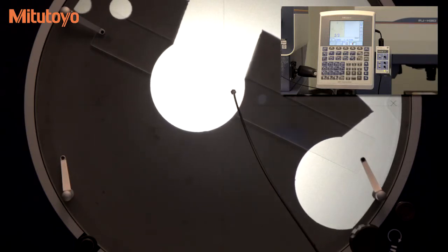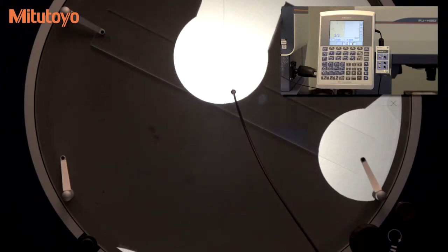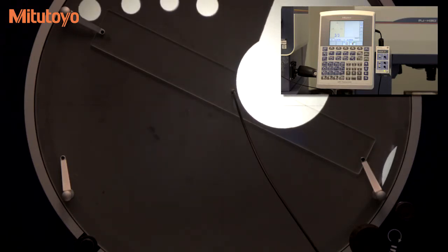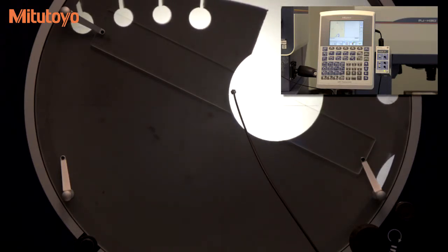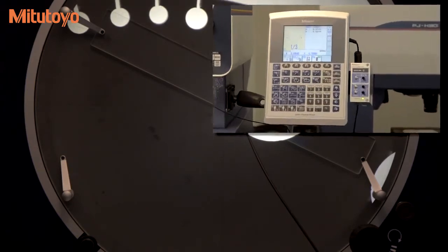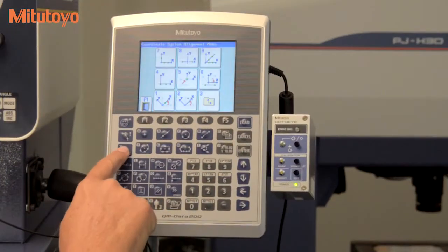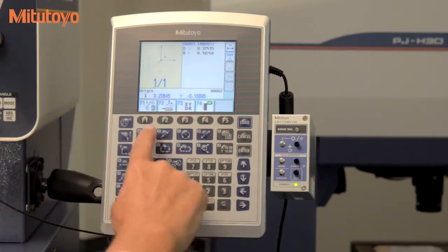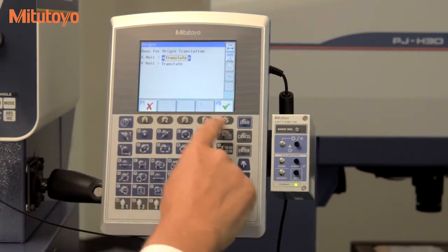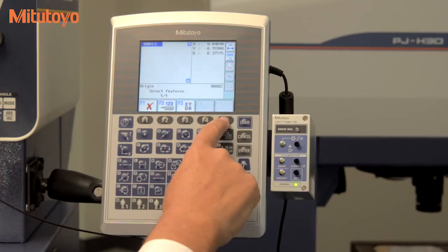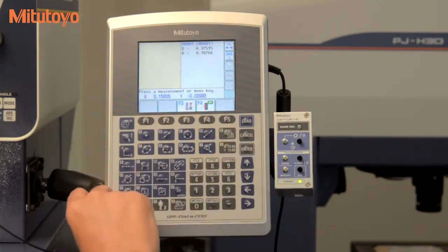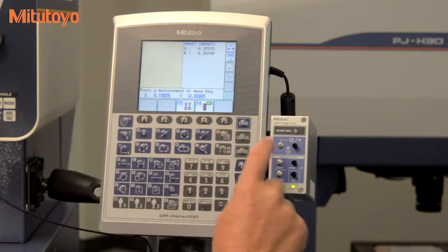Here we find the center of a circle to use as our new origin. Select the method to use to move the origin, just simple X and Y position in this example. Press the enter key to translate, and the coordinate system is aligned without refixturing the part.